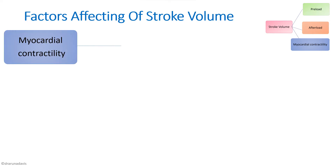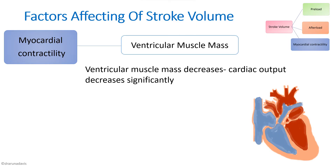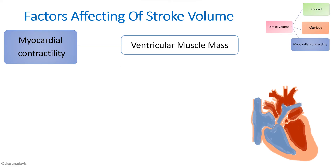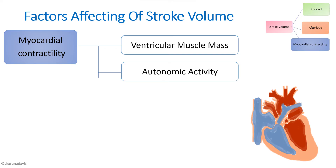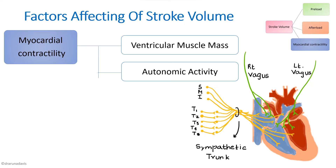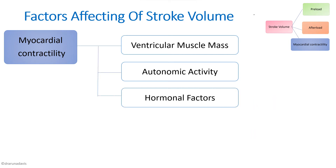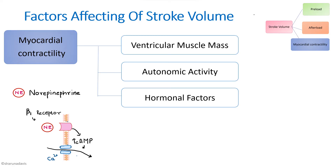The third factor affecting stroke volume is myocardial contractility, which depends on ventricular muscle mass — if ventricular muscle mass decreases, cardiac output decreases significantly, as seen in disease conditions. Autonomic activity also matters: sympathetic stimulation increases myocardial contractility, while parasympathetic stimulation tends to decrease it. Hormonal factors like catecholamines (norepinephrine, epinephrine) act on beta-1 receptors to increase contractility, as do insulin, glucagon, and thyroid hormones.